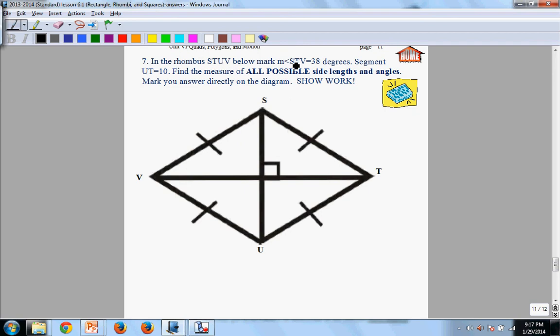It says in the rhombus below, STUV, we're going to mark STU with 38 degrees. Put your pencil on S. Go to T. V. That is 38 degrees. Segment UT. So U to T is 10.